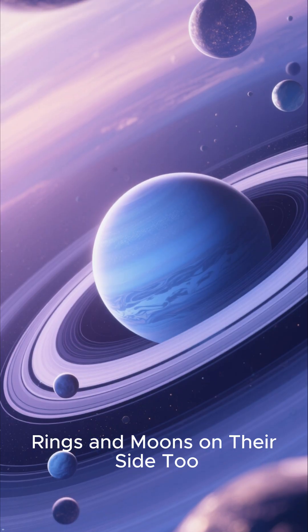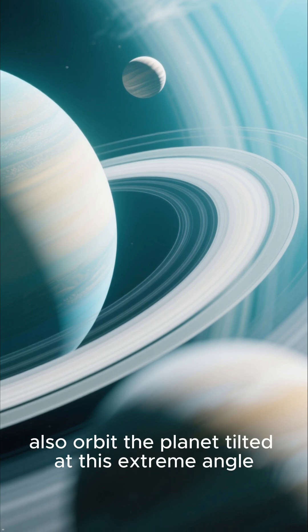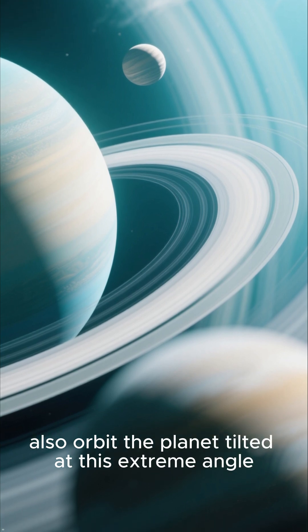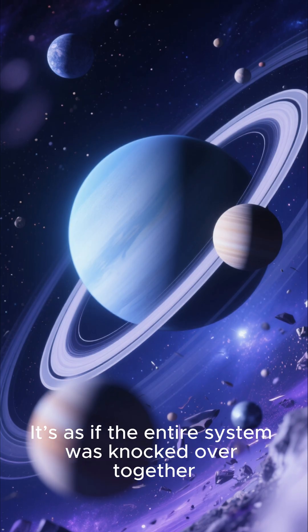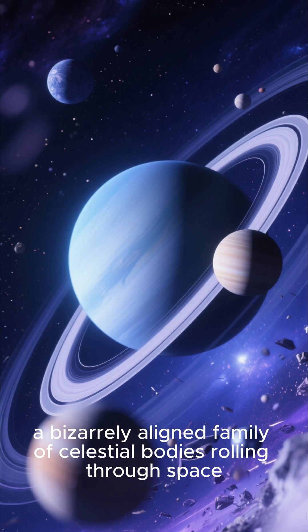Rings and moons on their side too. Incredibly, Uranus's rings and moons also orbit the planet tilted at this extreme angle. It's as if the entire system was knocked over together, a bizarrely aligned family of celestial bodies rolling through space.